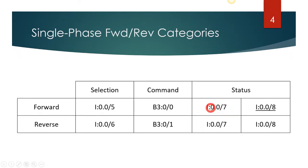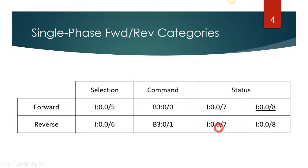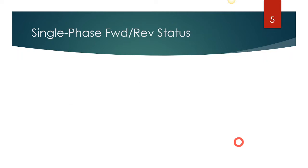Control relay one status comes in at the seventh bit, and control relay two comes in at the eighth bit. Our forward command bit is named 'forward run' — you could call it something different like 'forward command' or 'forward direction.' If CR1 has status and CR2 has no status, that is our forward direction. If CR1 has status and CR2 is also energized, that is our reverse direction status. In the next slide we'll see how to code that and make it look like just one piece of information.